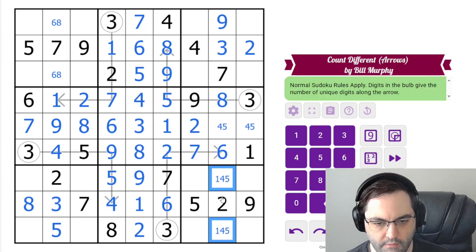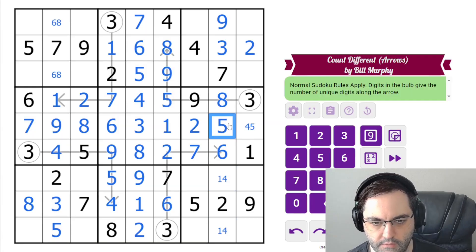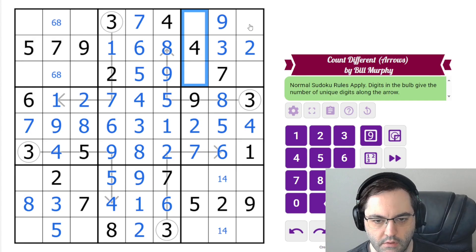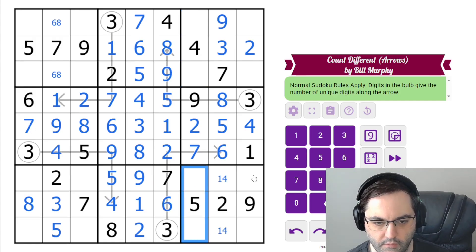And then one, four, five. Neither of these can be five. So this must be our five. And then we get a one, four pair. One can't go in these cells. Five can't go in these cells. Eight. I don't see that resolved yet.